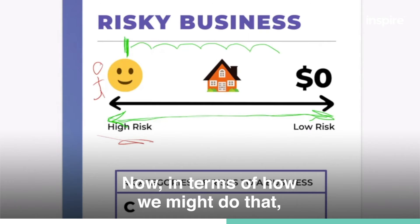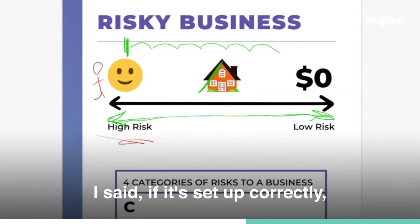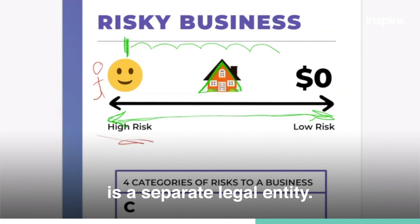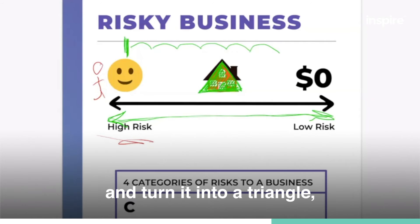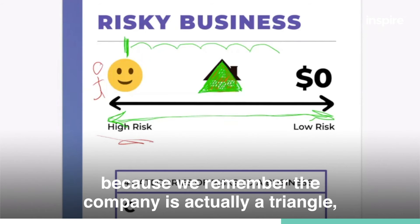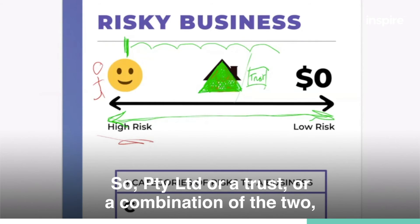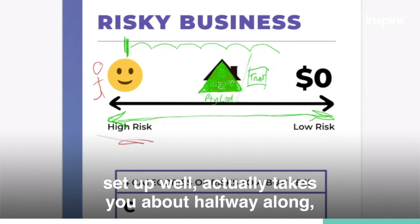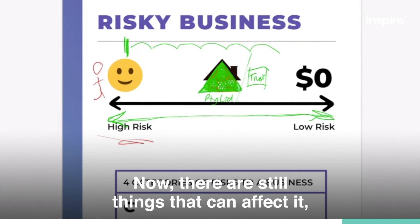In terms of how we might do that, a company or trust, if it's set up correctly, is a separate legal entity. If you can please draw over your house icon here and turn it into a triangle, because the company is actually represented as a triangle — a Pty Ltd, or a trust, or a combination of the two, set up well, actually takes you about halfway along this continuum in my opinion. There are still things that can affect it, but